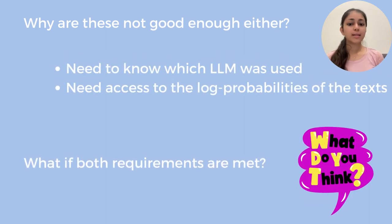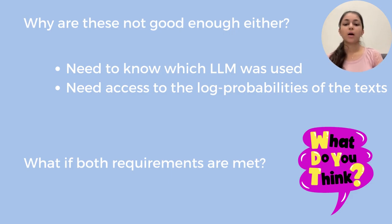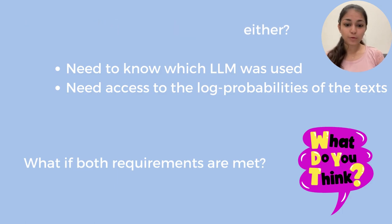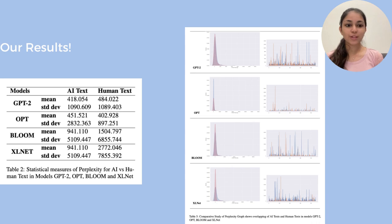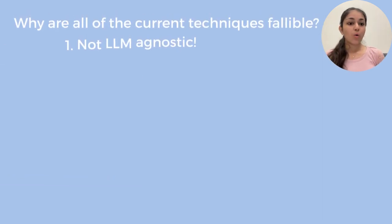Even though these techniques technically sound foolproof, why are they not good enough? First, you need to know which language model was used, and you need access to the log probabilities, because all of these techniques are based on the log probabilities of the words. But even if you could overcome those two challenges and access the log probabilities, our results conclusively show they are still not foolproof. We tested models GPT-2, OPT, Bloom, and ExcelNet and measured the perplexity of AI text versus human text — and there is absolutely no statistically significant difference between them.